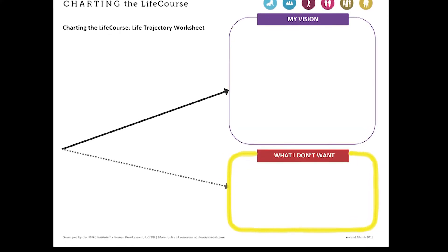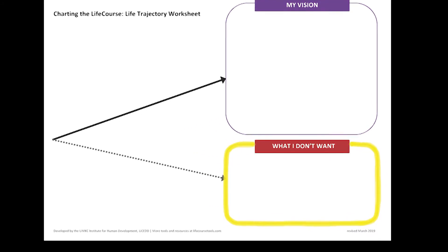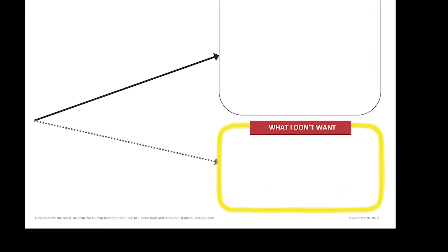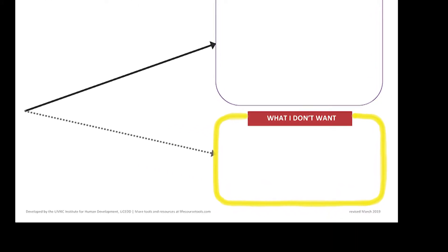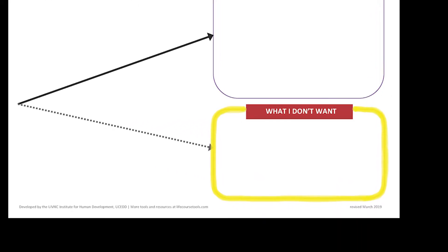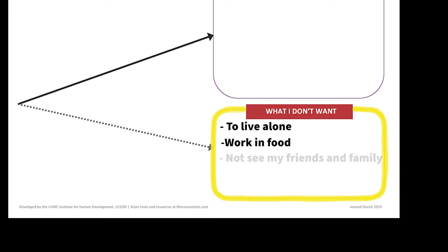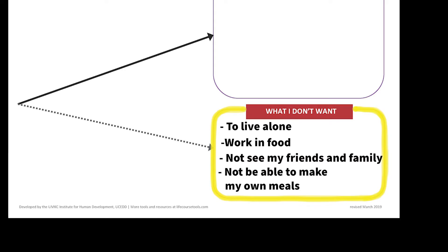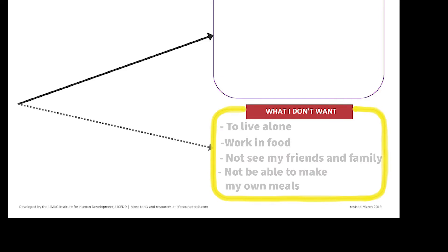The next step is to discuss what the individual with a disability does not want in her life. For example, the individual may not want to live alone. Once that information is identified, it is documented in the box in the bottom right-hand corner labeled What I Don't Want.